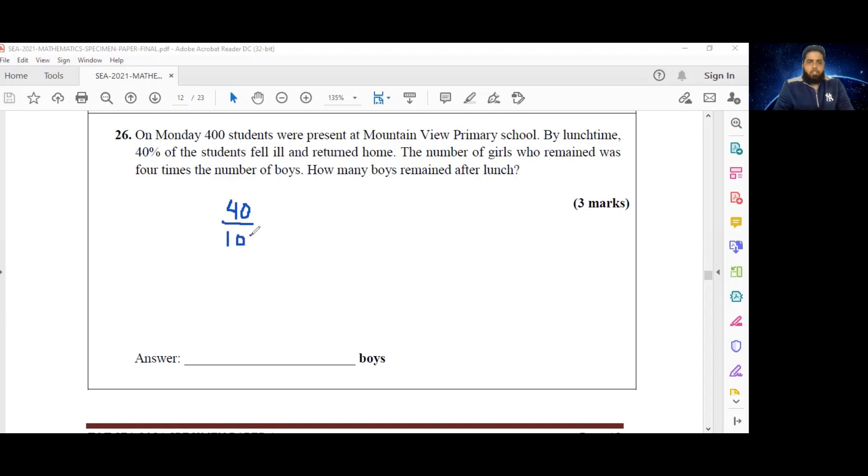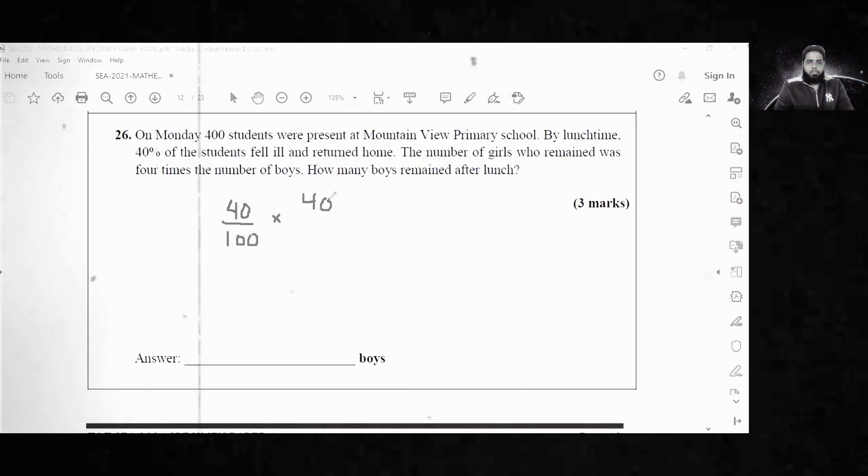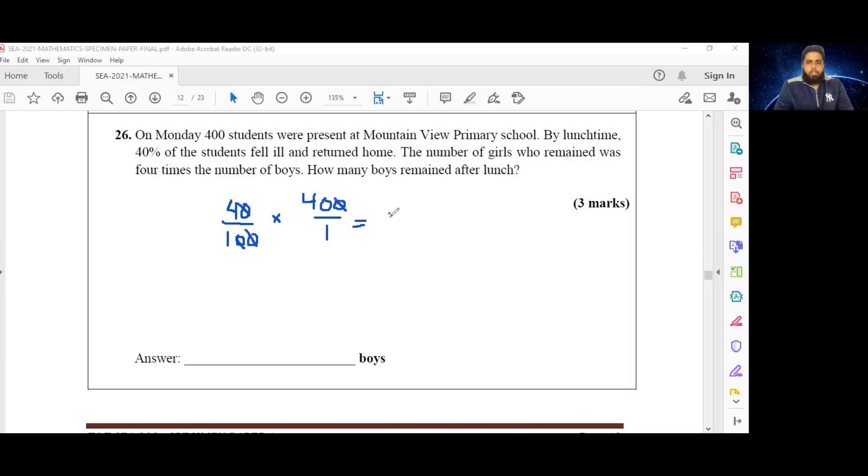We have to find 40% of 400, and that's going to give us 160 students.